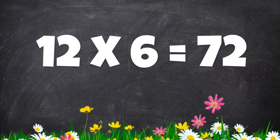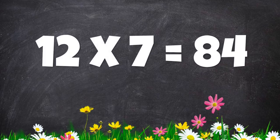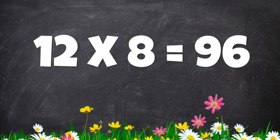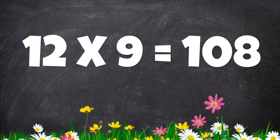Twelve sixes are seventy-two. Twelve sevens are eighty-four. Twelve eights are ninety-six.